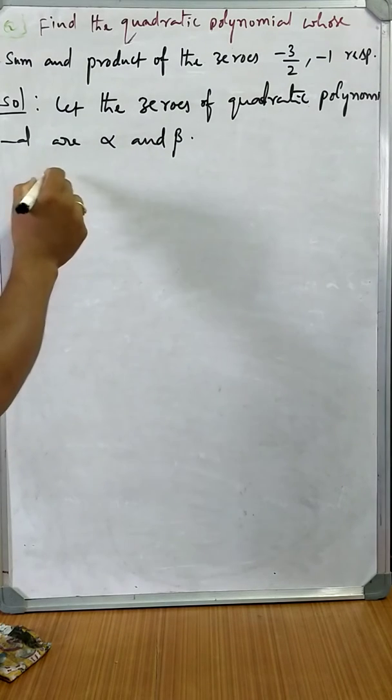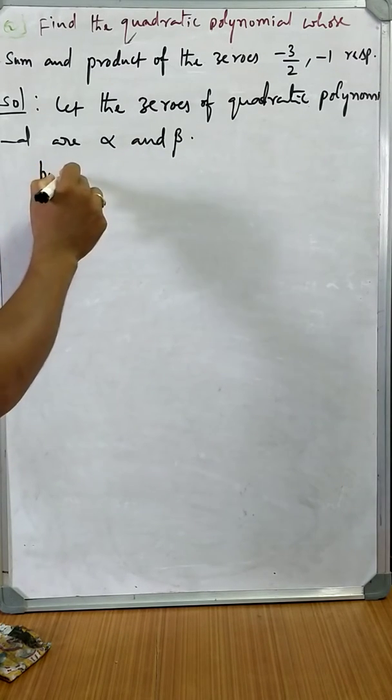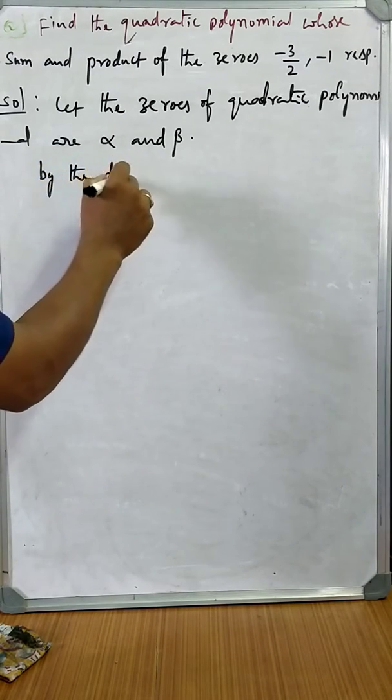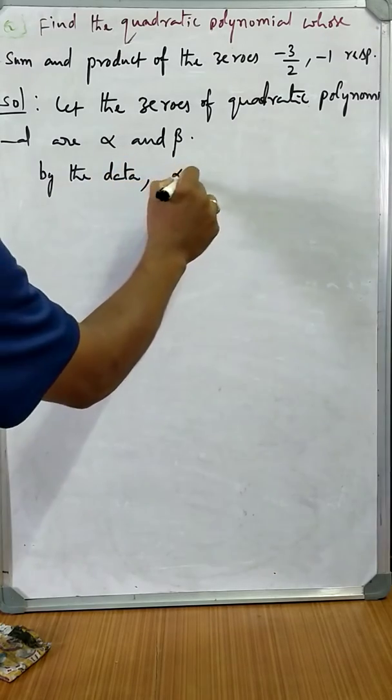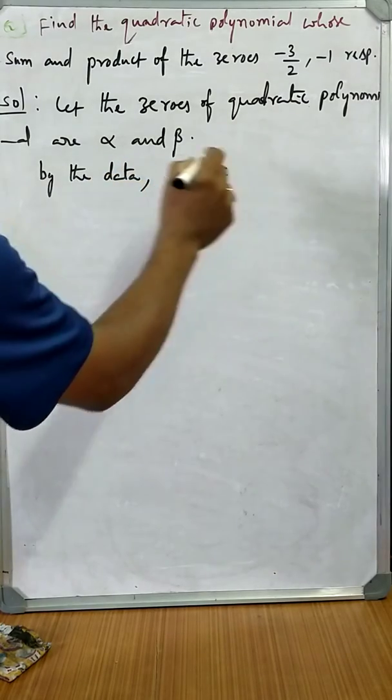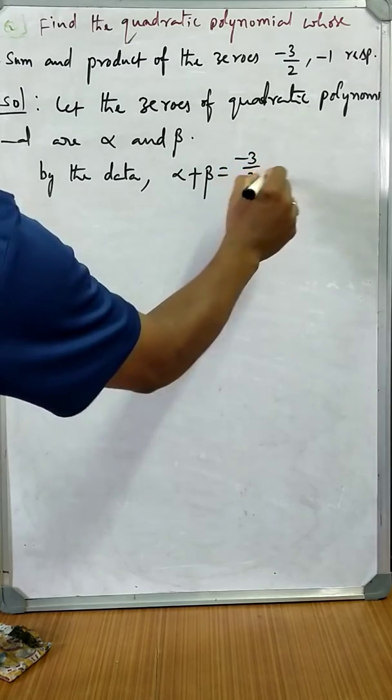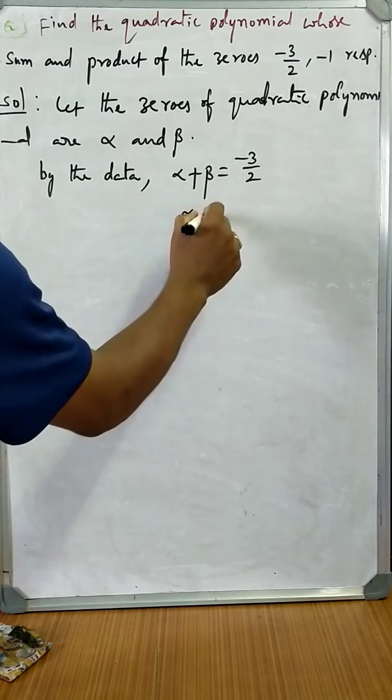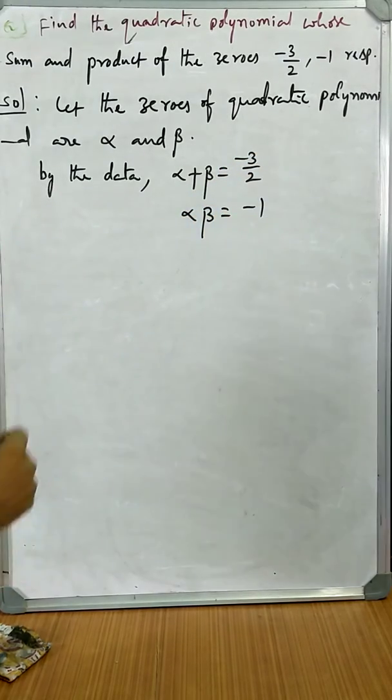By the given data, the sum of the zeros is minus three by two and the product of the zeros is minus one.